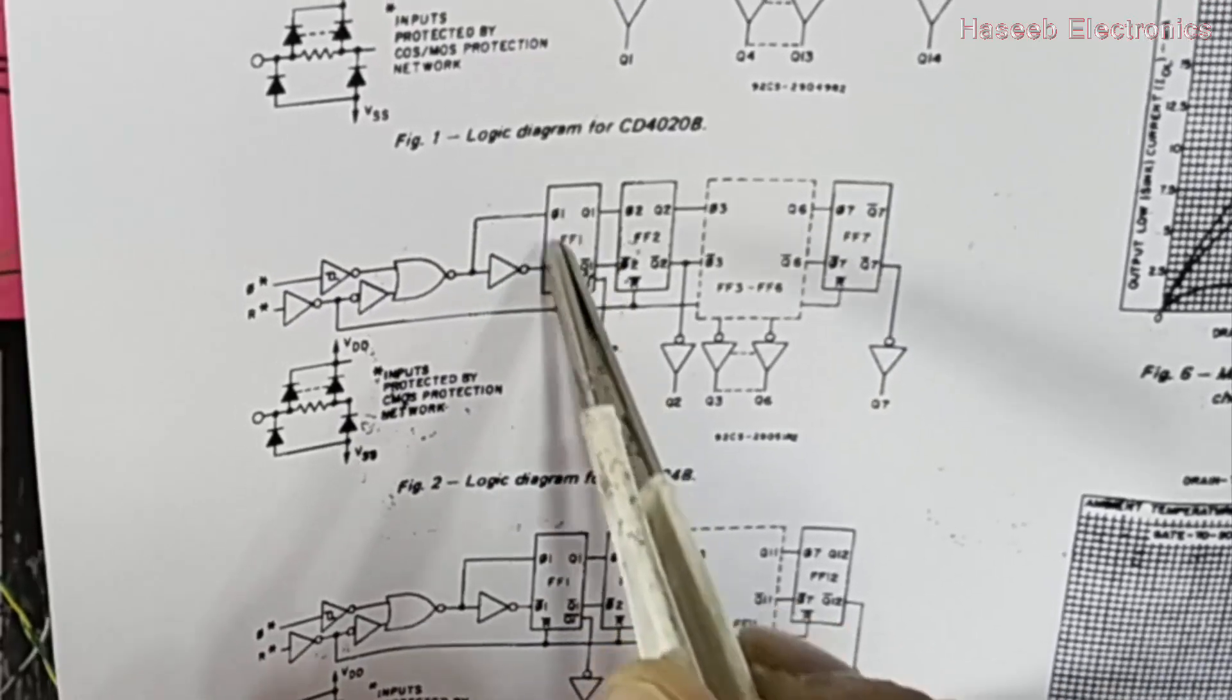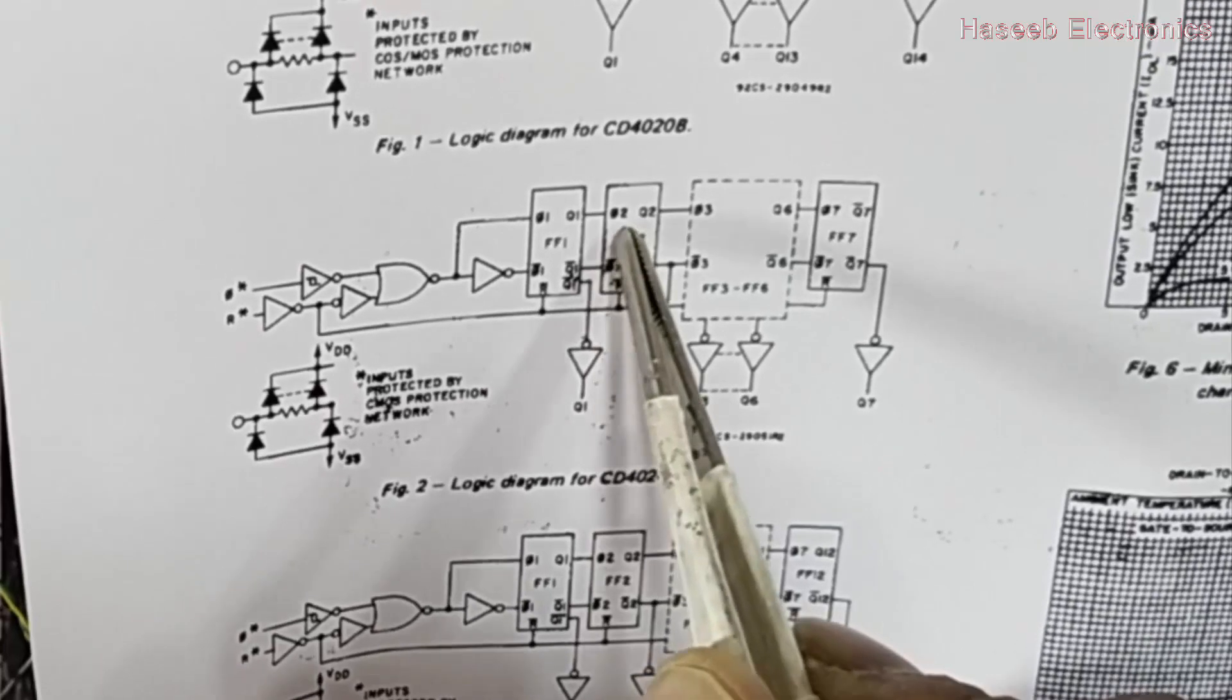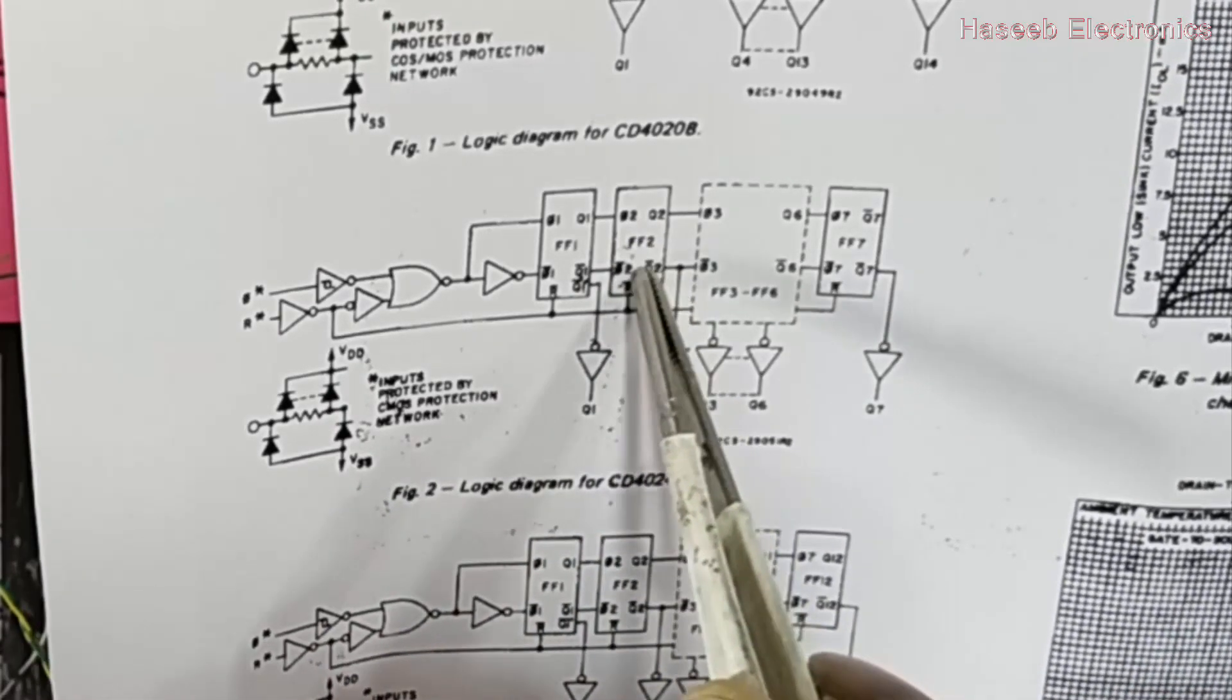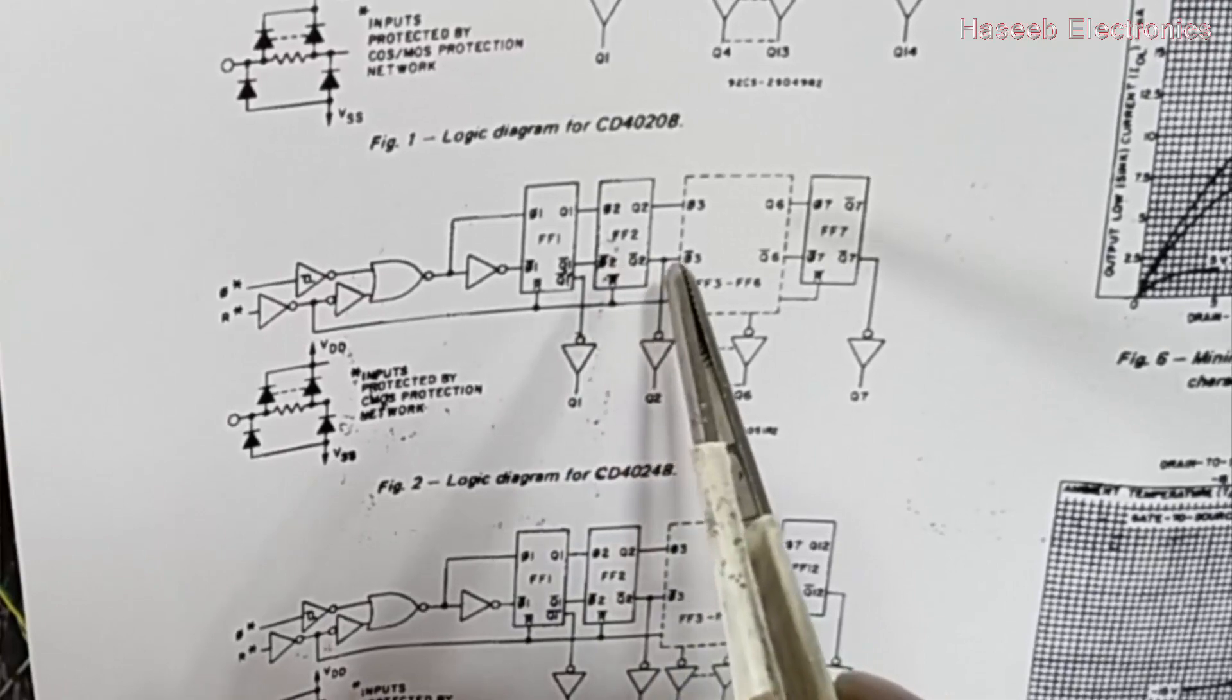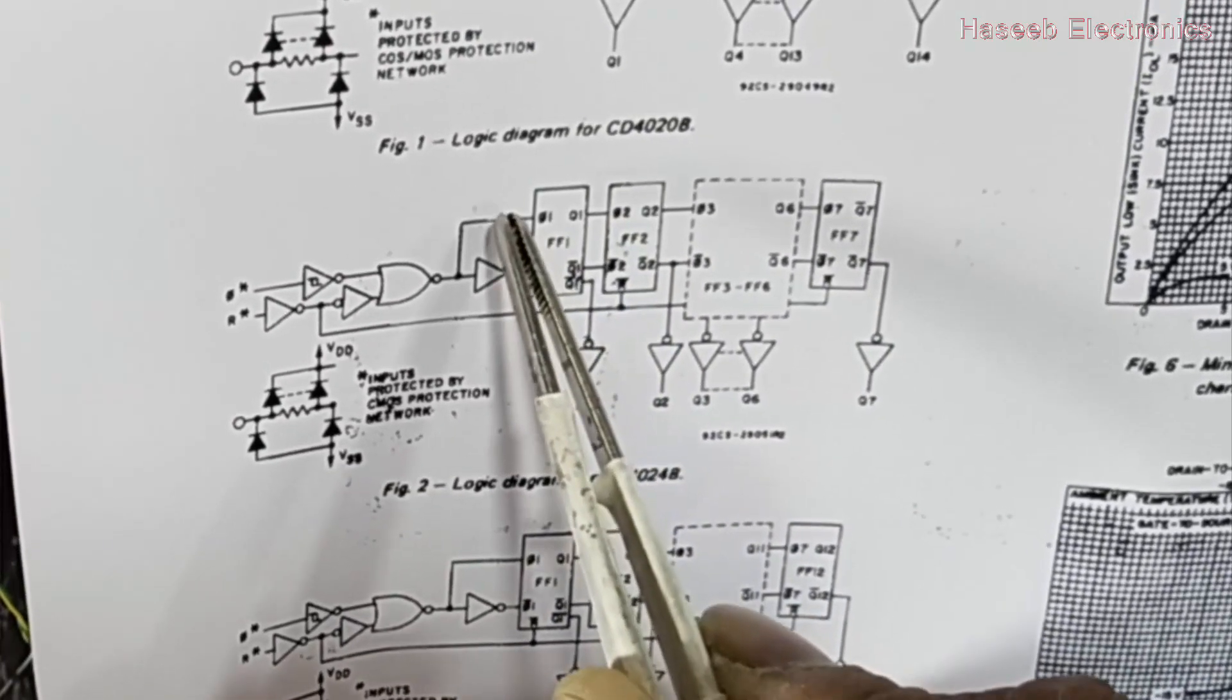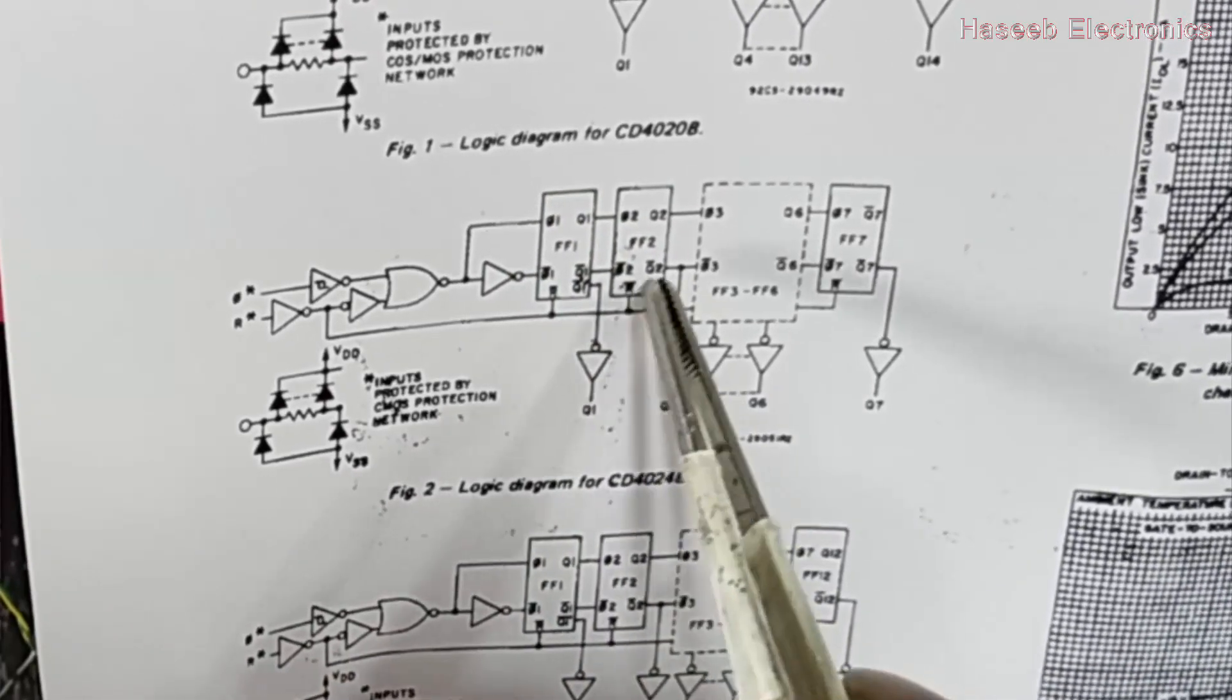The first input is for the first stage. The output of stage number one is input for stage number two. Then the output of stage number two is input for stage number three, and so on. In this configuration, each flip-flop has to check its input. When it becomes down at trailing edge, it will switch its output. It is a flip-flop, either Q1 or Q bar output, so it will shift its output.